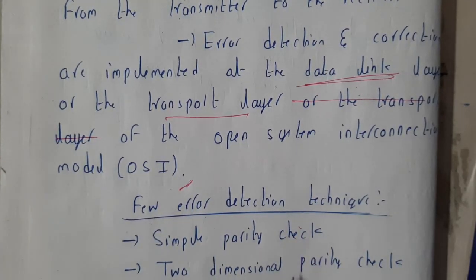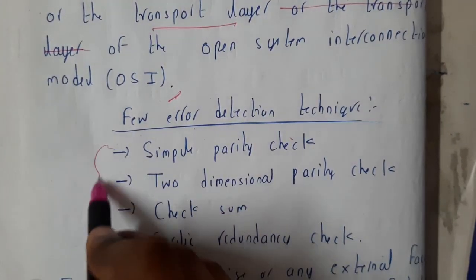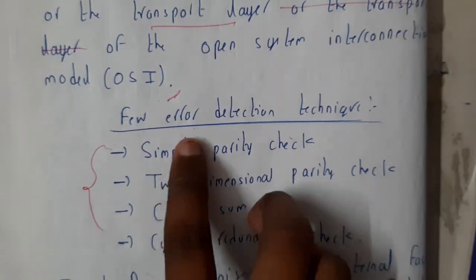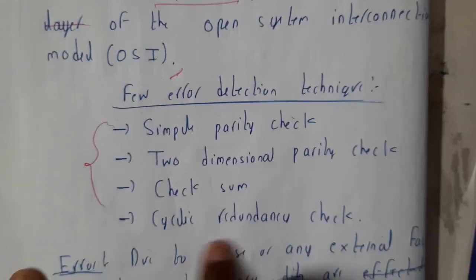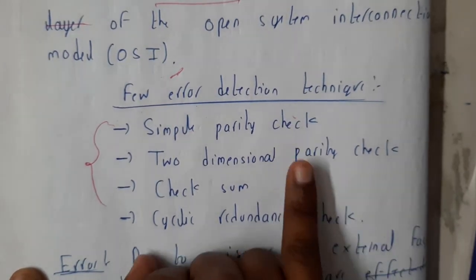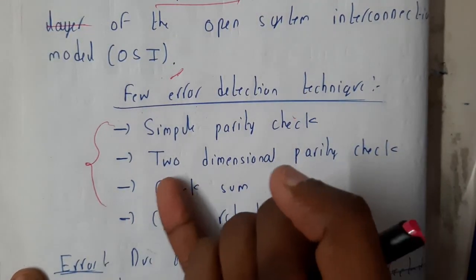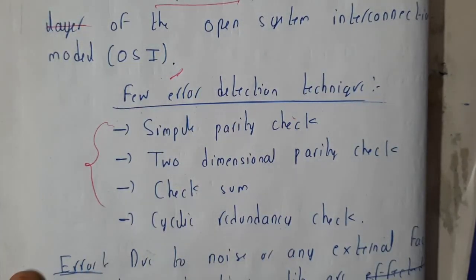We have four different techniques to detect the error and one method for correcting the error. The four detection methods are: simple parity check, two-dimensional parity check, check sum, and cyclic redundancy check. The error correction code is called hamming code, which we'll be going through with theory and problems.